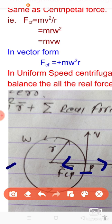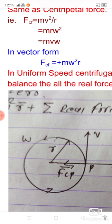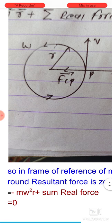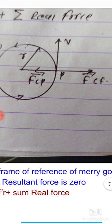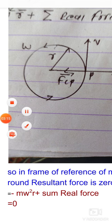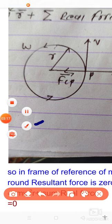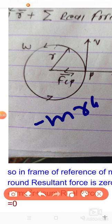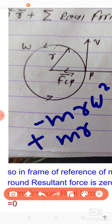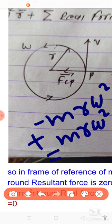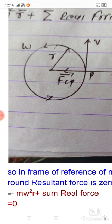Centripetal force and centrifugal force balance each other. So in the frame of reference of the merry-go-round, the resultant force is zero. The centripetal force is minus mrω² and the centrifugal force is plus mrω². So the resultant force in this frame of reference is the sum of centripetal force plus centrifugal force, which equals zero. In the frame of reference of the merry-go-round, resultant force is zero.